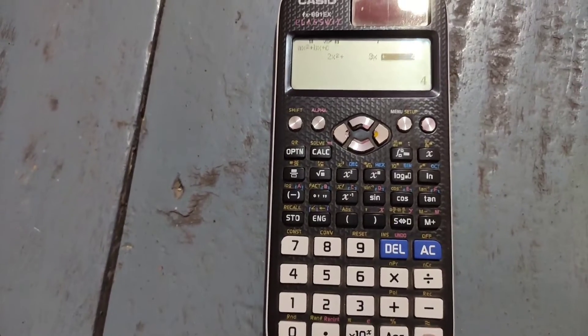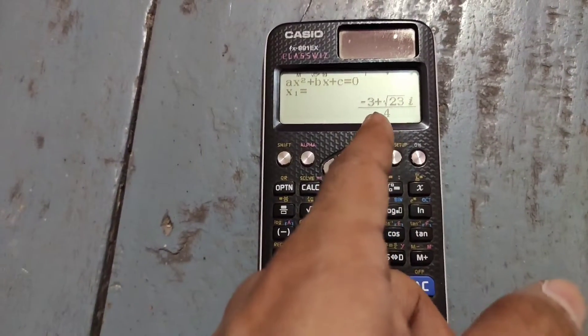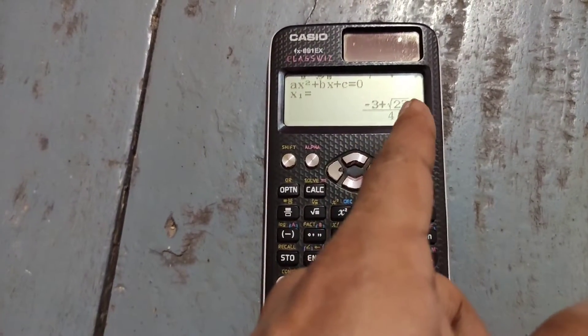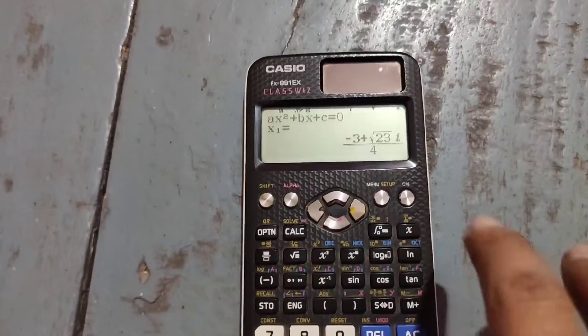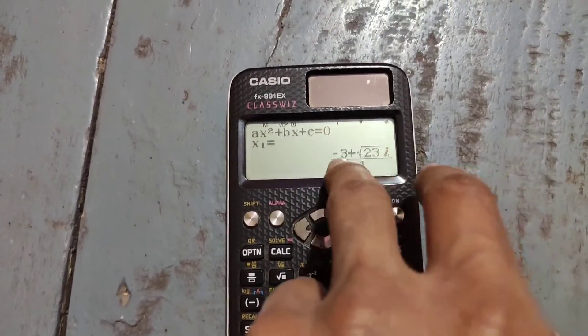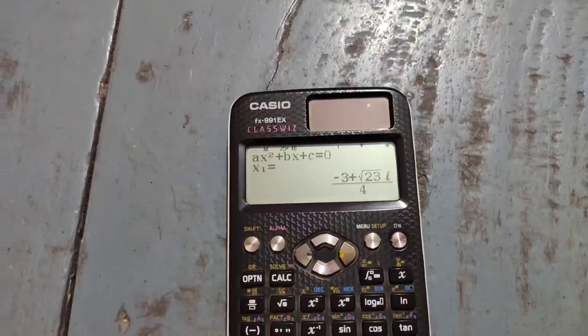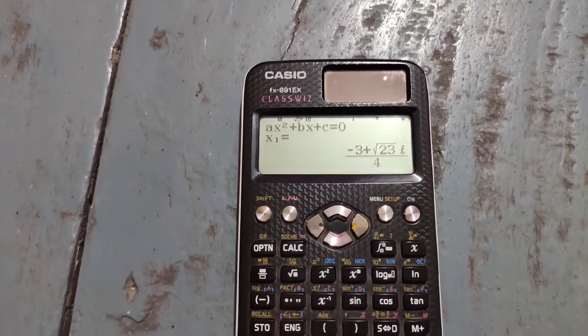To solve, press equal. Now we are getting some different type of terms—imaginary terms—because the discriminant of the equation was less than 0.